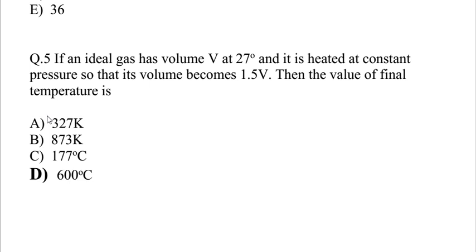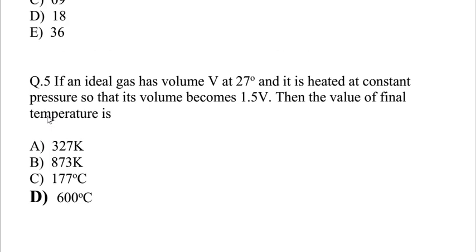Question number 5: If an ideal gas has volume V at 27 degrees centigrade and it is heated at constant pressure so that its volume becomes 1.5V, then the value of final temperature is: 327 Kelvin, 873 Kelvin, 177 degrees centigrade, or 600 degrees centigrade. We have volume V at 27 degrees centigrade. We heat it and the volume increases to 1.5V. We need to find the final temperature. You have 40 seconds to solve it.